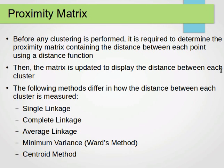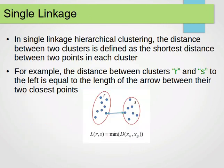We use a distance function, then update the matrix to display the distance between each two clusters. The following methods differ in how the distance between clusters is measured. We have five methods: single linkage, complete linkage, average linkage, minimum variance (Ward's method), and centroid.